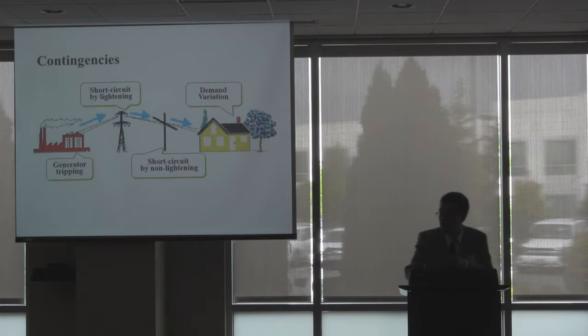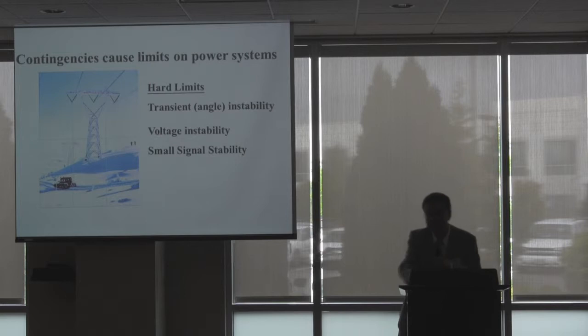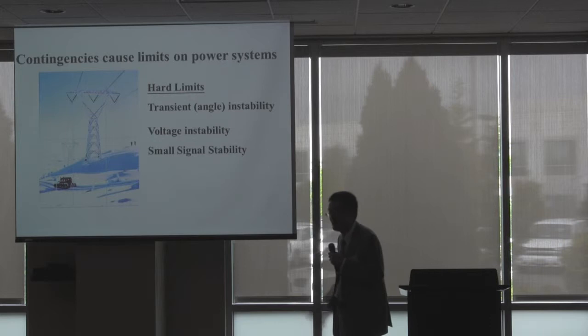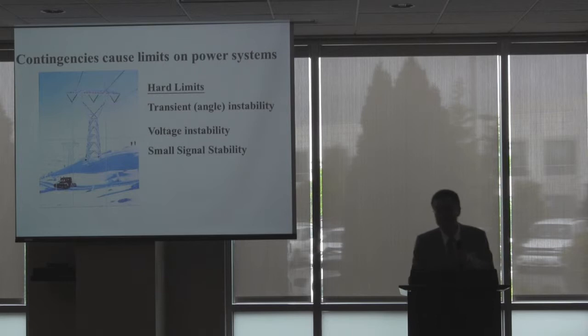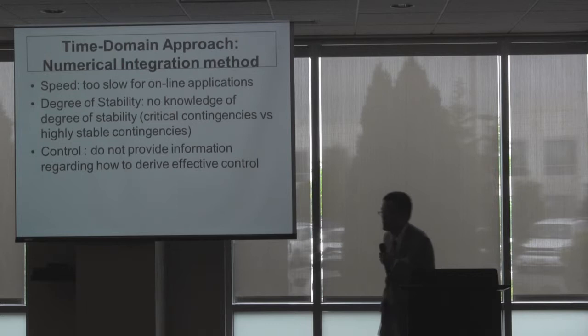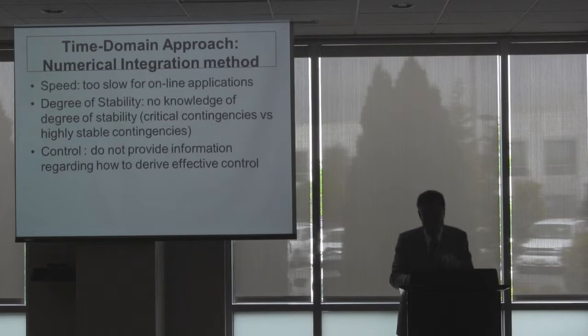Let me give a little background on this method. Contingencies occur on power systems in different forms. Just like a human being — we have heart attacks, we have cancer — our system has a heart attack and also has a cancer. I classify this as a hard limit: transient instability, voltage instability, small-signal instability. The problem with the traditional time-domain approach to analyze transient stability is that it's too slow and cannot tell you the degree of stability, or more importantly, how to design control to improve transient stability.